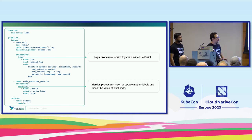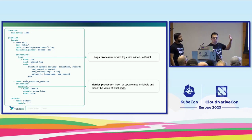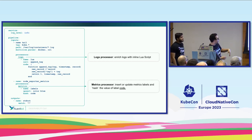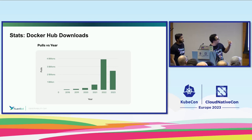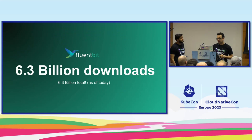This is reflected in the new YAML configuration. For logs, you can run a Lua script — we support scripting in FluentBit — but also for node exporter metrics, we can add labels. And now we're happy to announce that we hit 6.3 billion downloads of FluentBit. This is a lot.